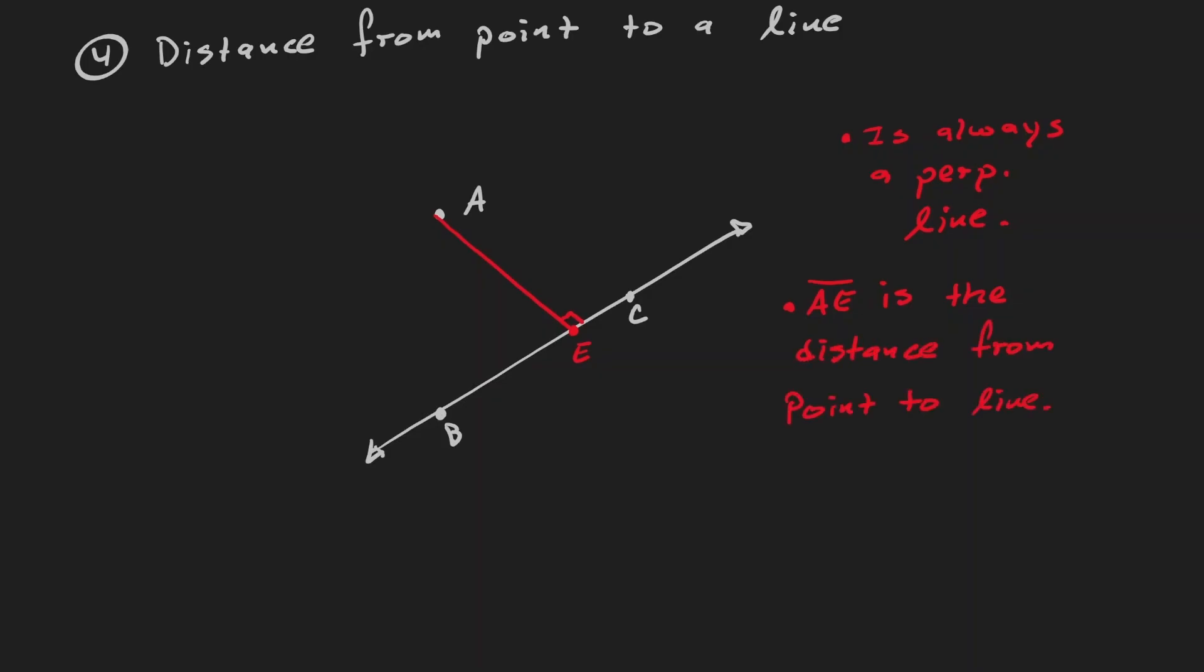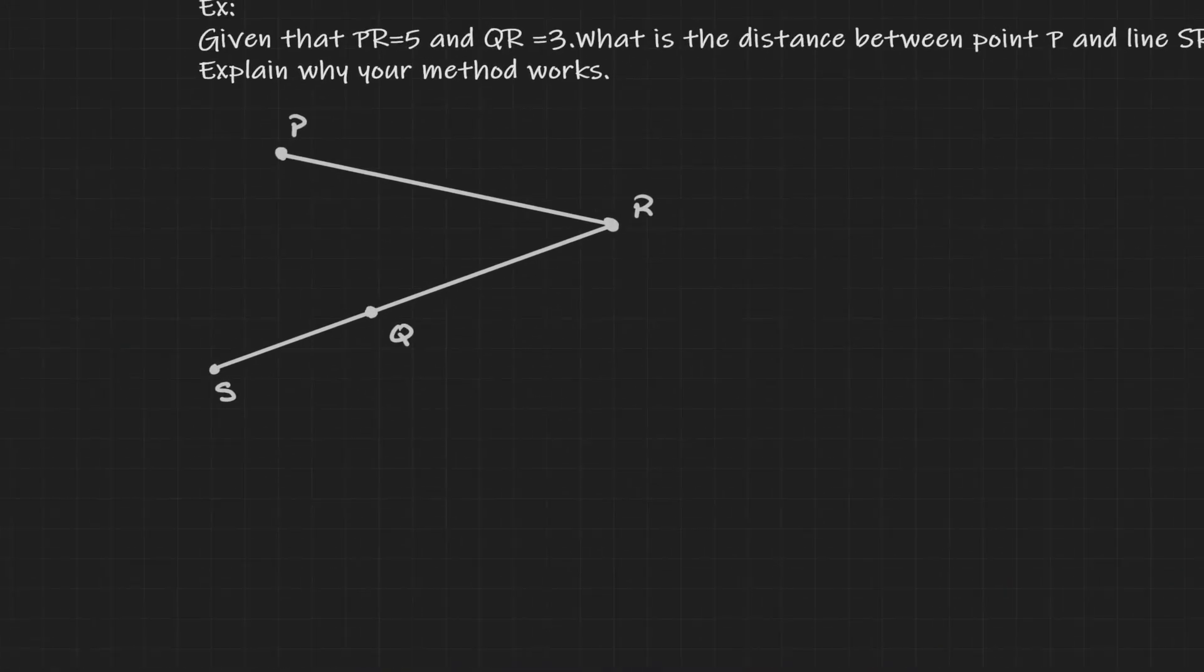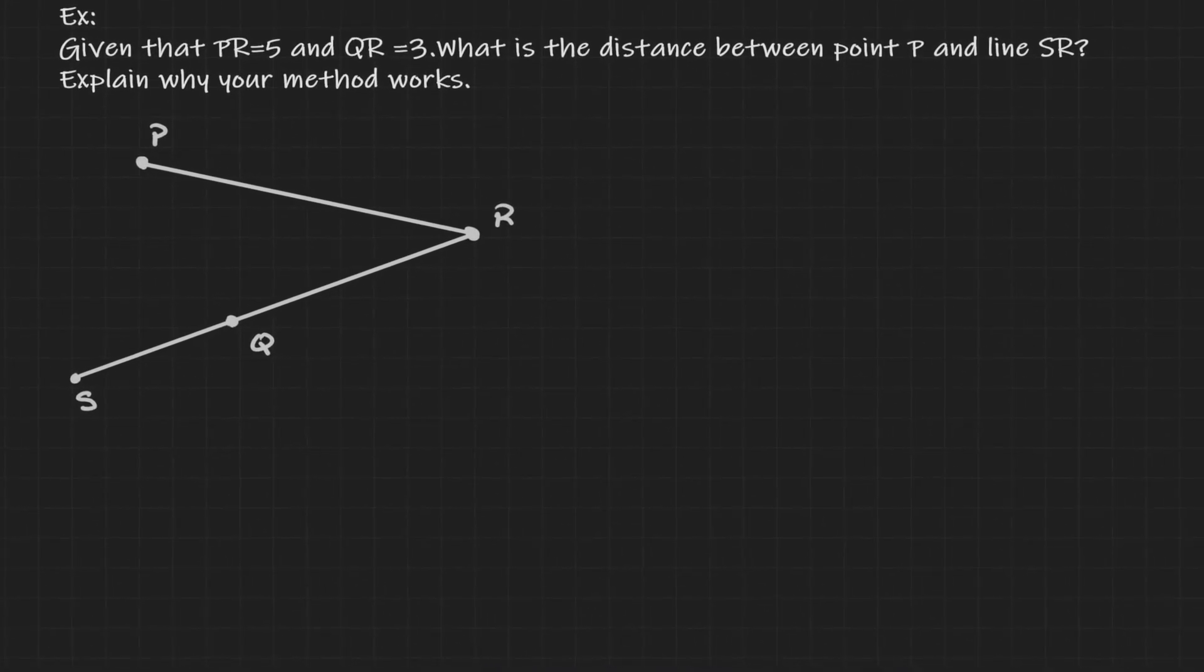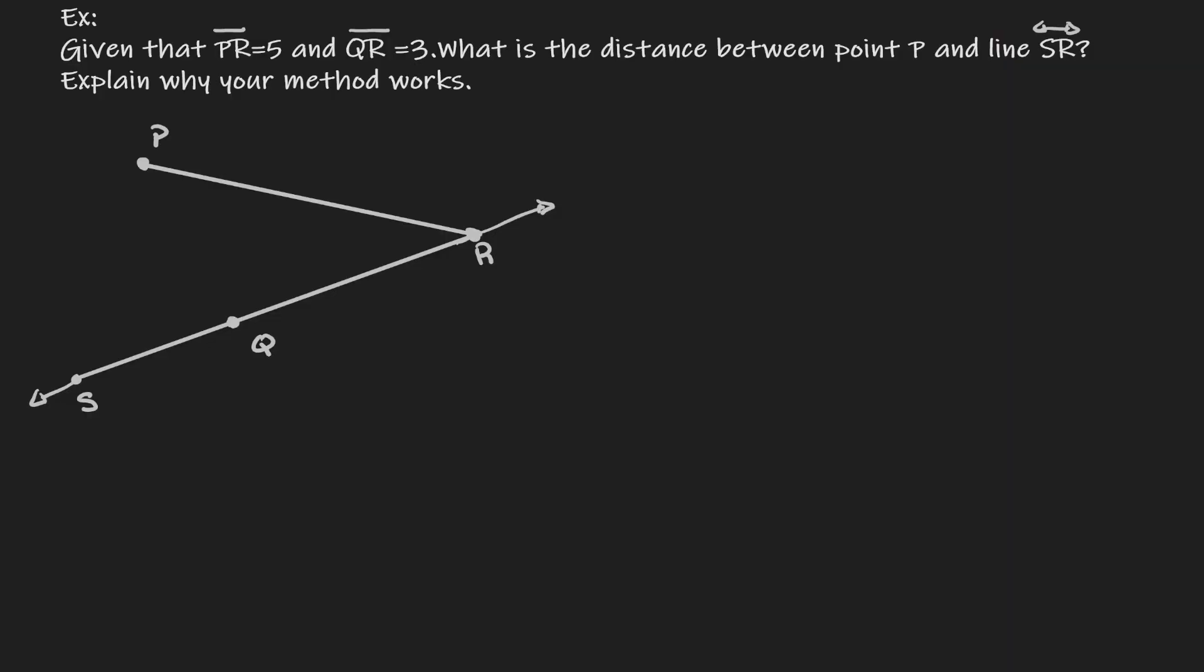So let's finish up this lesson by putting this idea into practice. Here we have an example. So let's take a look at what this says. So here we have the situation. We have that PR is equal to 5 and QR is equal to 3. But the question is, what is the distance between P and the line SR?